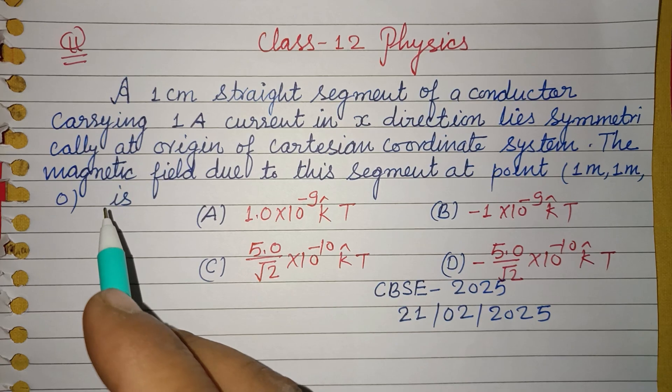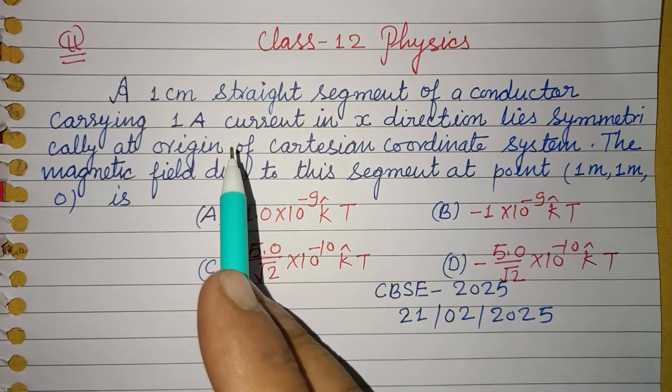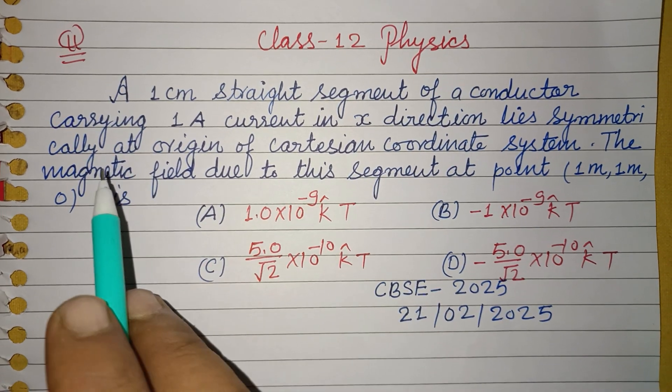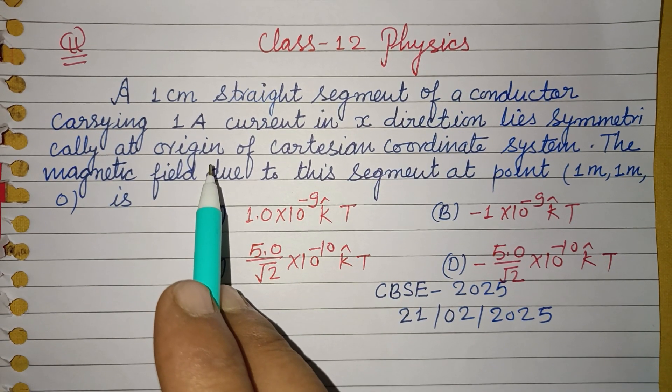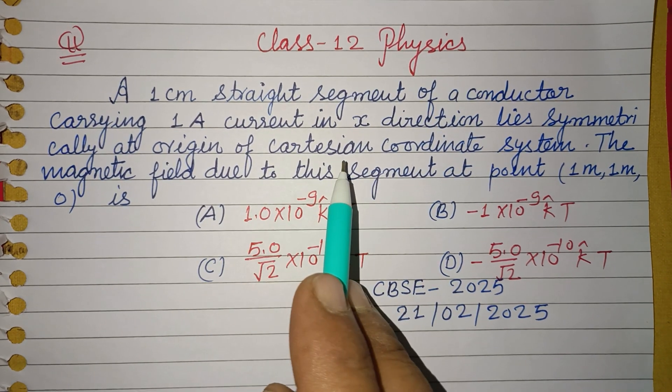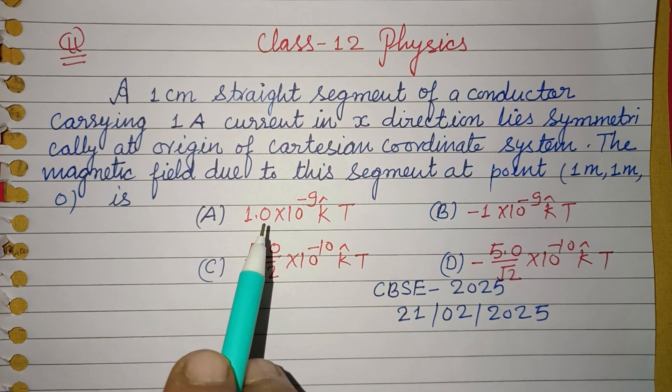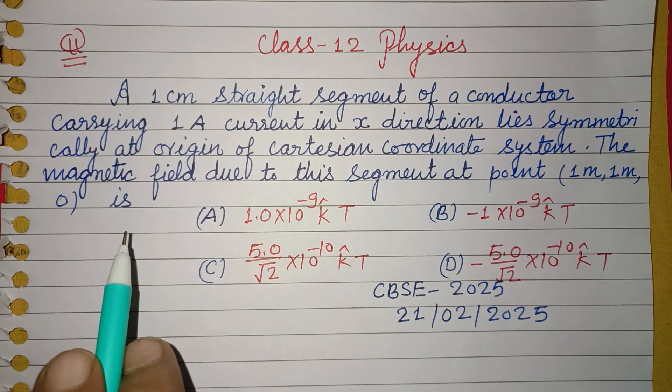A 1 cm straight segment of a conductor carrying 1 ampere current in x direction lies symmetrically at origin of Cartesian coordinate system. The magnetic field due to this segment at point (1,1,0) is...